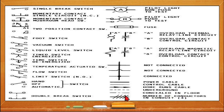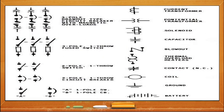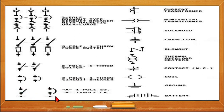We also have concealed-in-floor wiring. The piping symbol indicates how many conductors are present — the number of tick marks on the line shows the conductor count; four lines means four conductors in that pipe. For protection, we have symbols for a three-pole breaker with magnetic overloads, the single-throw three-pole fuse switch or main safety switch, the two-pole single-throw breaker, a single pole switch, and a single pole breaker. Additional symbols include the current transformer, potential transformer, solenoid, capacitor, blowout, thermal overload heaters, normally closed contact, normally open contact, coil, ground, and battery.